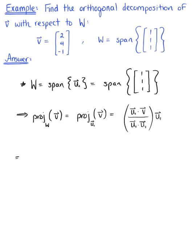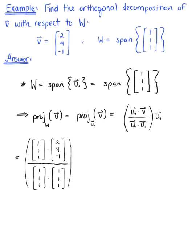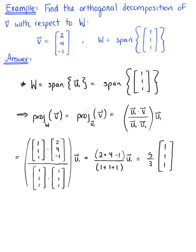Plugging in what we have: the dot product of u₁ (the vector 1, 1, 1) dotted with vector v (2, 4, -1), all divided by the dot product of u₁ with itself — remembering this is just a scalar multiple, still multiplied by vector u₁. Computing these dot products: in the numerator we have 2 plus 4 minus 1, all divided by 1 plus 1 plus 1, multiplied by vector u₁ (components 1, 1, 1). We conclude that the orthogonal projection of vector v onto subspace W is the vector with components 5/3, 5/3, 5/3.